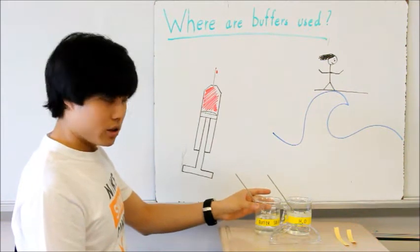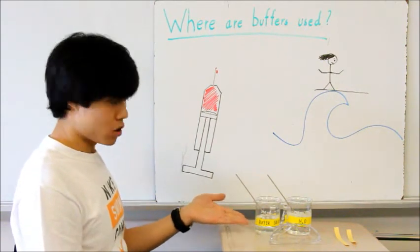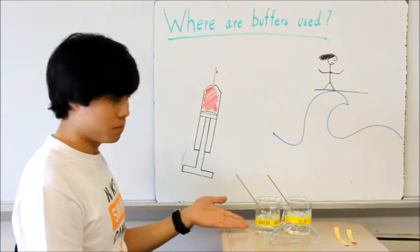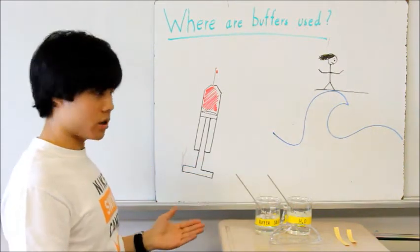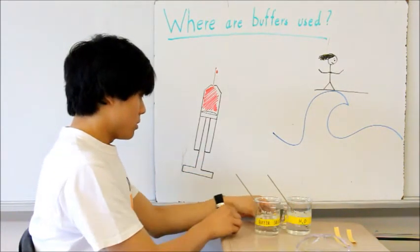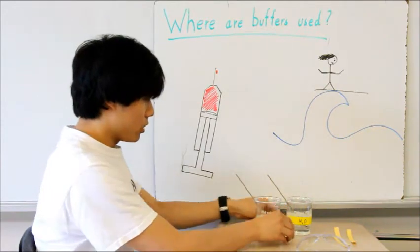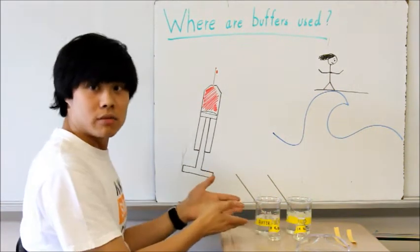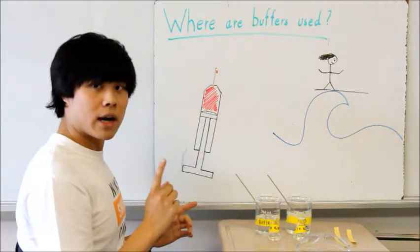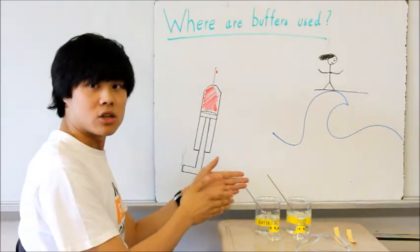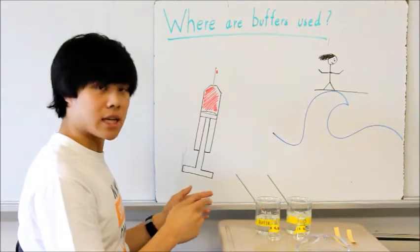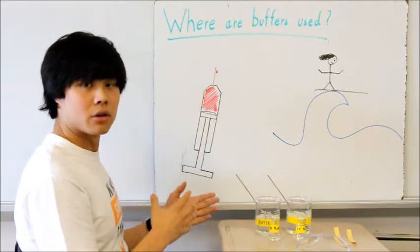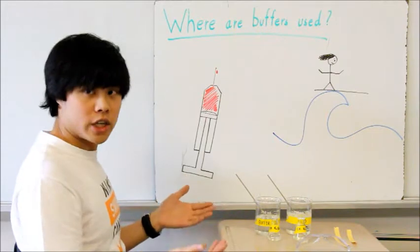Over here, on the left, you have a sodium acetate acetic acid buffer. On the right, you have just regular distilled water. Now, what I'm going to do is I'm going to add one molar sodium hydroxide into each of these solutions. But before I do that, I'm going to test the pH of each of these. And then, I'm going to test the pH after adding the base in order to see how much the pH has changed.